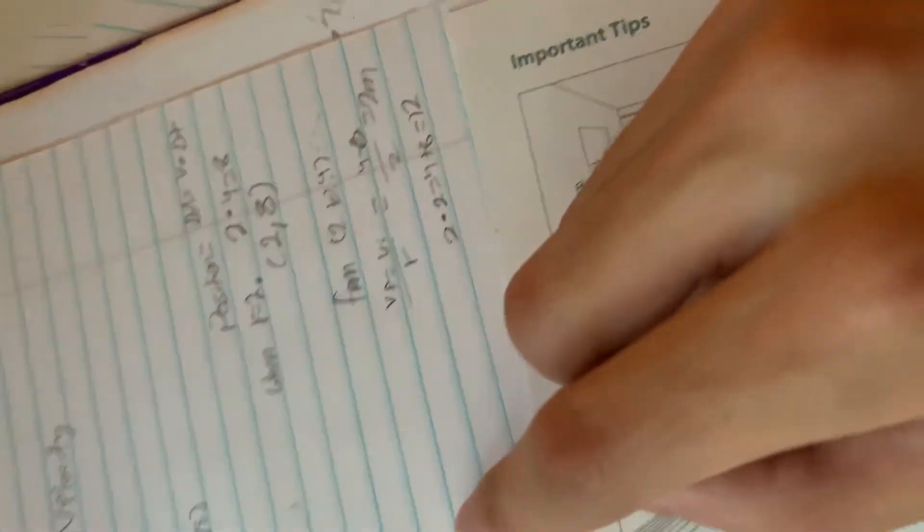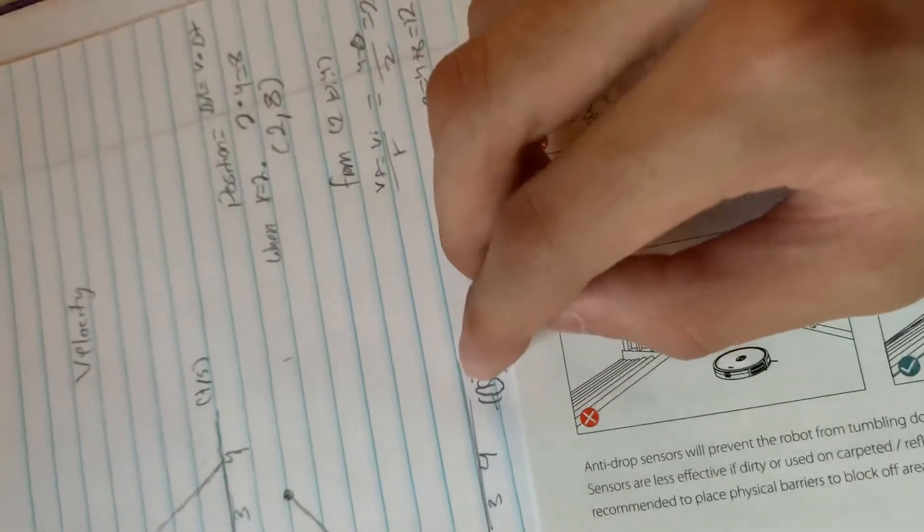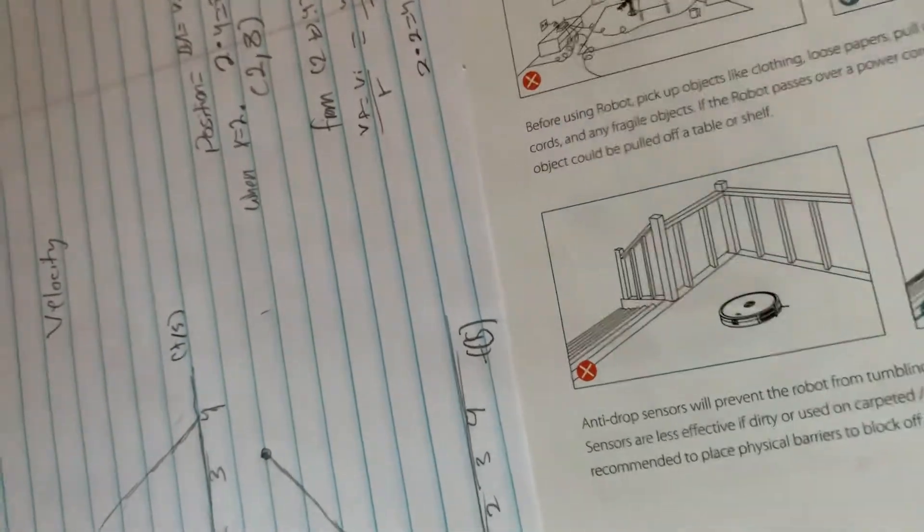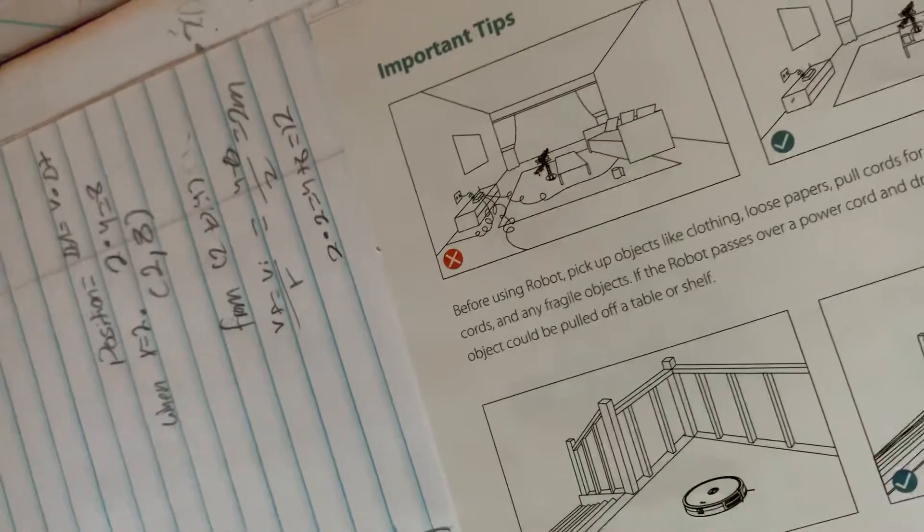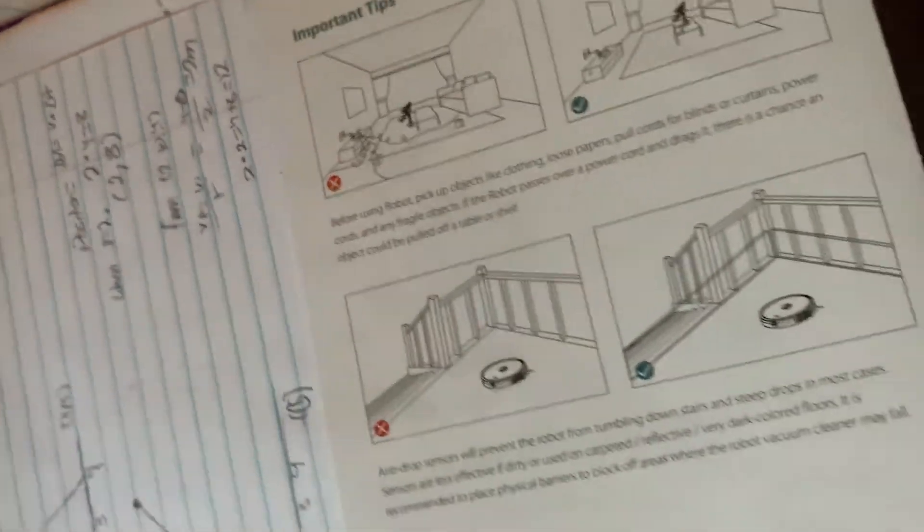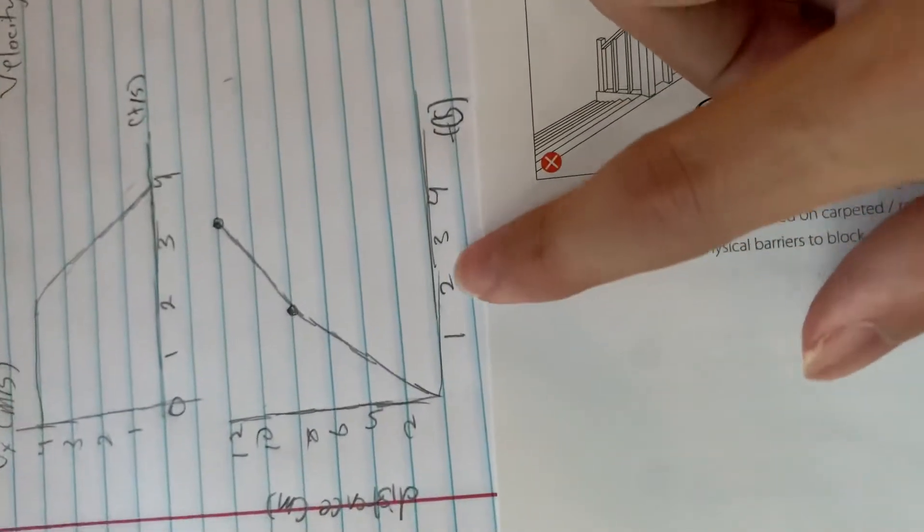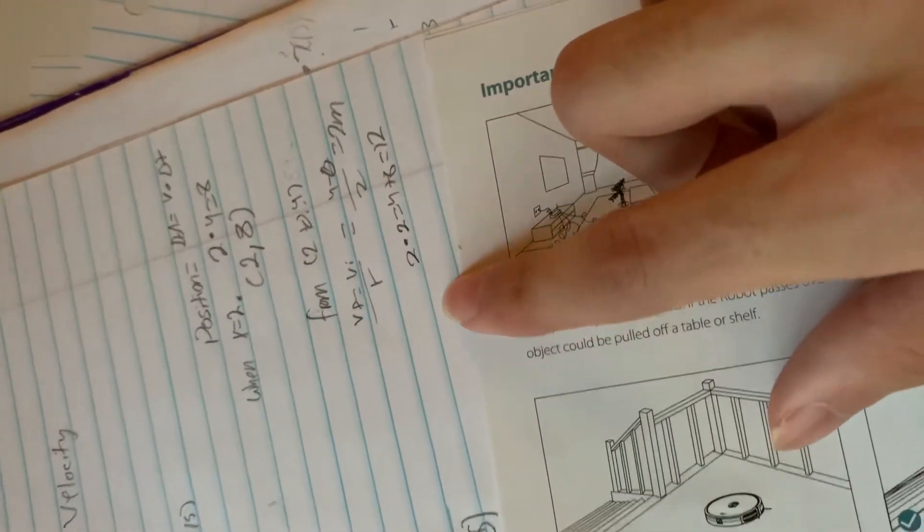From t equals 2 to t equals 4, we then use the equation final velocity minus initial velocity over t, which gives us 4 minus 0 over t equals 2 meters. And then we multiply that by 2, because the interval from 2 to 4 is 2. So then that would be 2 times 2 equals 4.